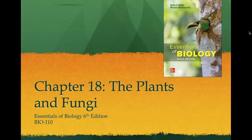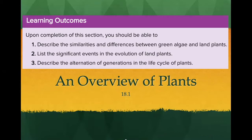Hello class. This week we will be covering chapter 18, the plants and fungi in the Essentials of Biology textbook, 6th edition. The first section we're going to cover is section 18.1, which is going to cover an overview of plants. Upon completion of this section you should be able to describe the similarities and differences between green algae and land plants, list the significant events in the evolution of land plants, and describe the alternation of generations in the life cycle of plants.